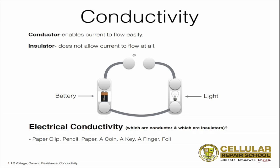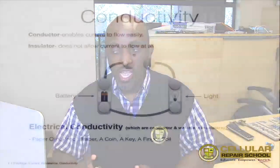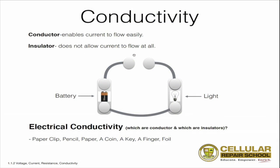We want to understand the word conductor and we want to understand the word insulator. A conductor basically means to enable current to flow easily. If you think about that in a circuit form — and what you're looking at as the example on this page is an incomplete circuit — it's a circuit that has an opening right at the very top. The conductivity would actually be represented here: what is this electrical energy flowing on and how conductive is it?